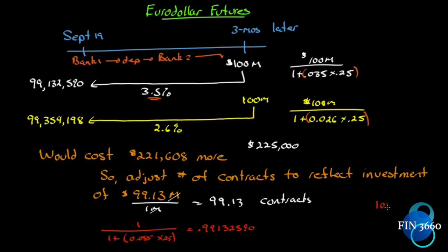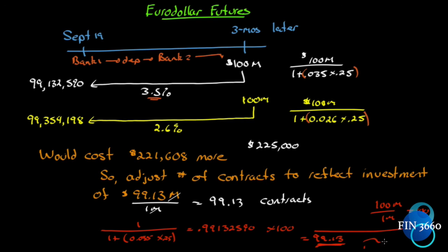We have $100 million; each contract is for $1 million — that's 100 contracts. That 100 multiplied by our adjustment factor gives us the adjusted number. On our 100 contracts, we apply the adjustment factor and get 99.13 contracts. All you have to do is discount $1 back by whatever interest rate you're trying to lock in to get your adjustment factor, then divide the maturity value by the contract value for your initial contract count, and apply the adjustment factor — that's your final number of contracts needed.